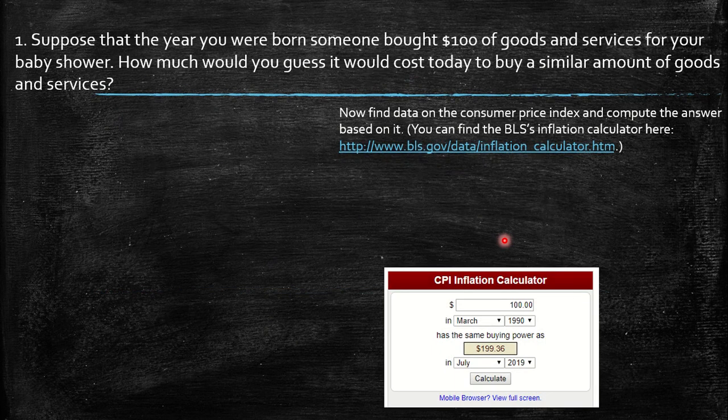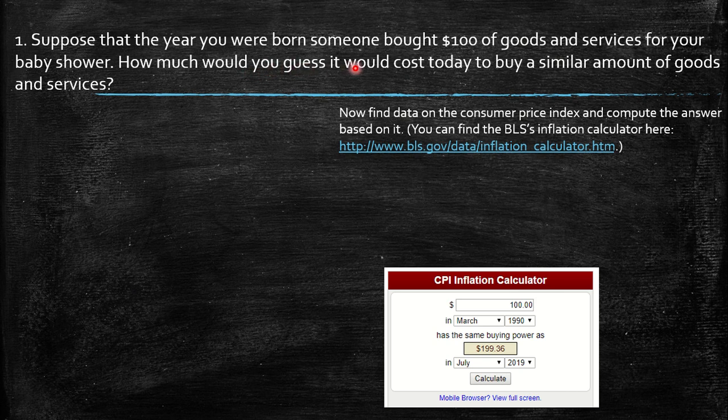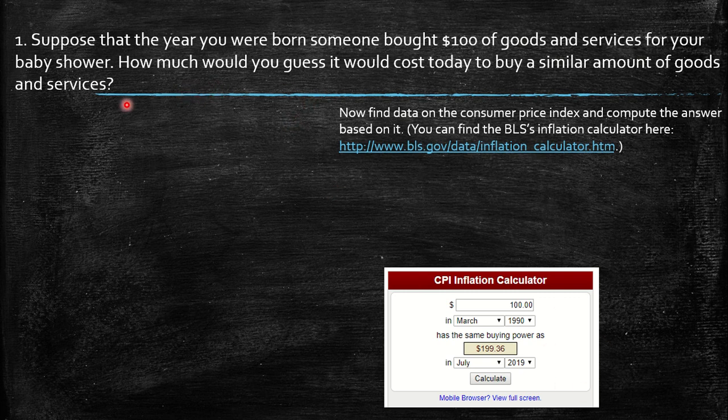So the first question says suppose that the year you were born someone bought one hundred dollars of goods and services for your baby shower. How much would you guess it would cost today to buy a similar amount of goods and services? Sorry for this introduction, this should appear afterwards, but whatever.